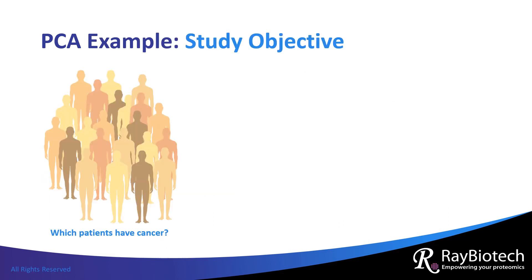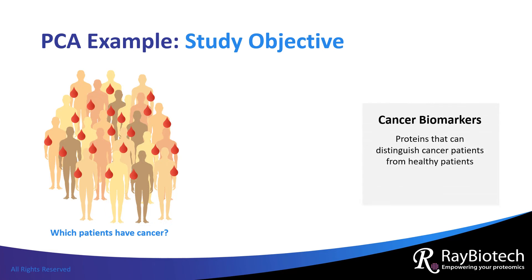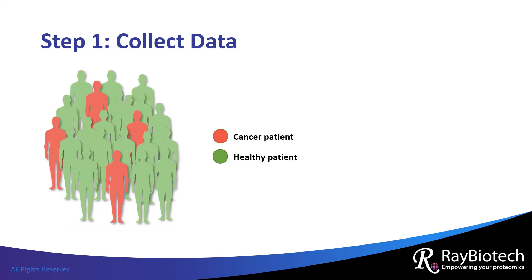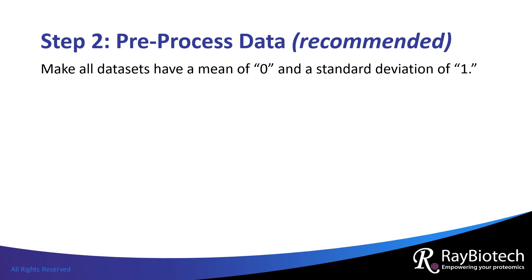Let's apply PCA to an imaginary study. We have a set of 22 patients who are either healthy or have cancer. We want to draw their blood so that we can identify cancer biomarkers — molecules in the blood called proteins — that can distinguish cancer patients from healthy patients. We're going to do this by measuring the different proteins in the blood. The first step is to collect the data; we know four of these patients have cancer and the rest are healthy. The next step is to pre-process the data, which is highly recommended to make the data more comparable across attributes. Pre-processing ensures that the data sets have the same mean of zero and a standard deviation of one.